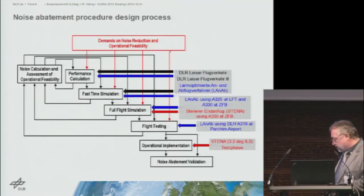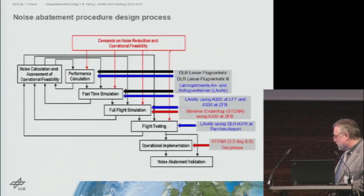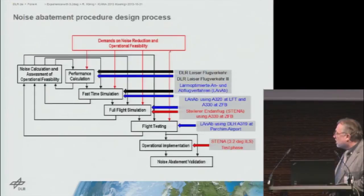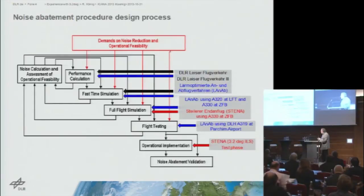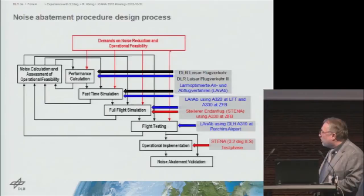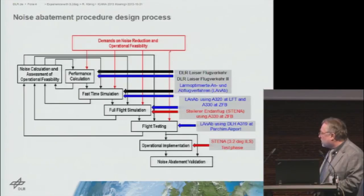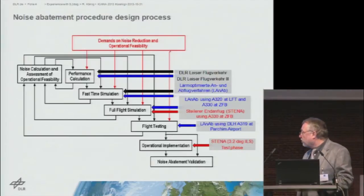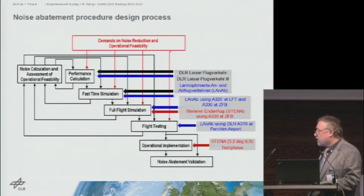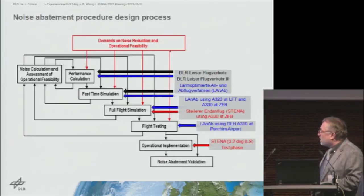This chart shows the design process for noise abatement procedures. It's a step-by-step process that starts by doing a noise calculation and assessment of operational feasibility. Then, after the performance calculation, we do a fast-time simulation. Once that's done, you move on to the full flight simulation stage — analyzing the flight in a simulator — followed by flight testing. Afterwards comes the operational implementation: integrating that into ordinary flight procedures, associated with noise abatement validation and assessing the actual noise levels.